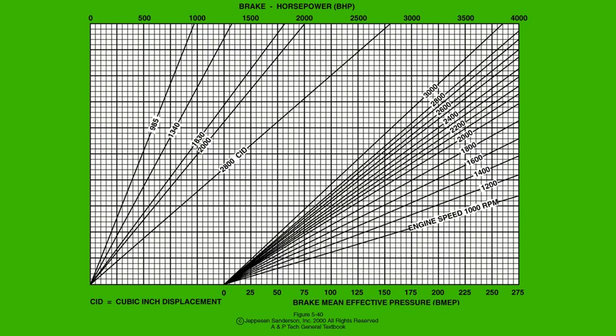If we wanted to find the brake mean effective pressure of a 2000 cubic inch engine providing 1700 brake horsepower at 2700 RPM, we would begin by drawing a vertical line down from 1700 horsepower until it intersected the diagonal line for a 2000 cubic inch engine. Next, we would draw a horizontal line from that intersection until it intersected the 2700 RPM diagonal line. From that point of intersection, we draw a line straight down to the bottom of the chart and find that at 2700 RPM while producing 1700 horsepower, a 2000 cubic inch engine will have an average cylinder pressure of 250 pounds per square inch.